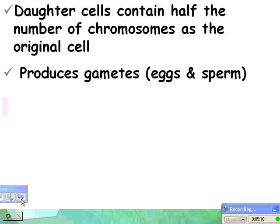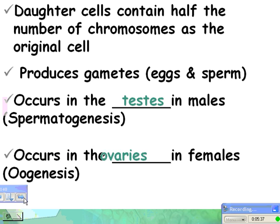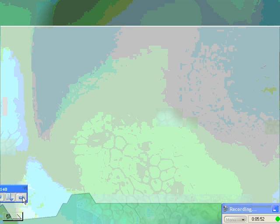This is what produces eggs and sperm. It occurs in the testes in males, and when it does, it's called spermatogenesis — that is, to make sperm. And it occurs in the ovaries in females, which is oogenesis. That's the same thing as meiosis, except in females.